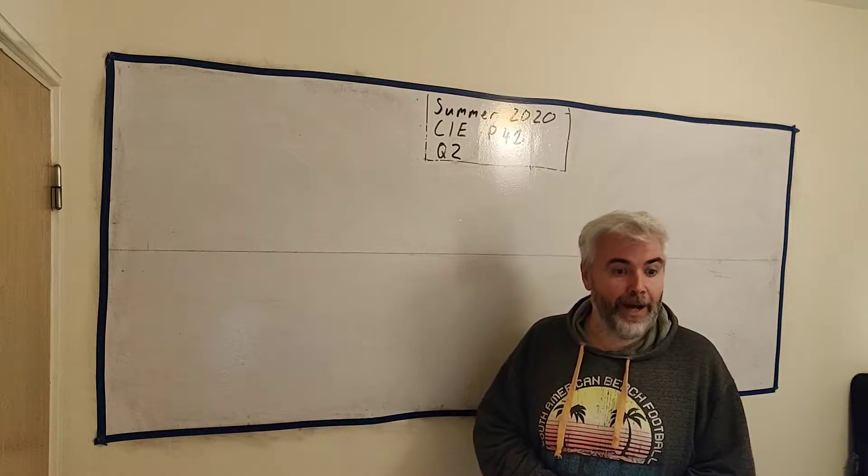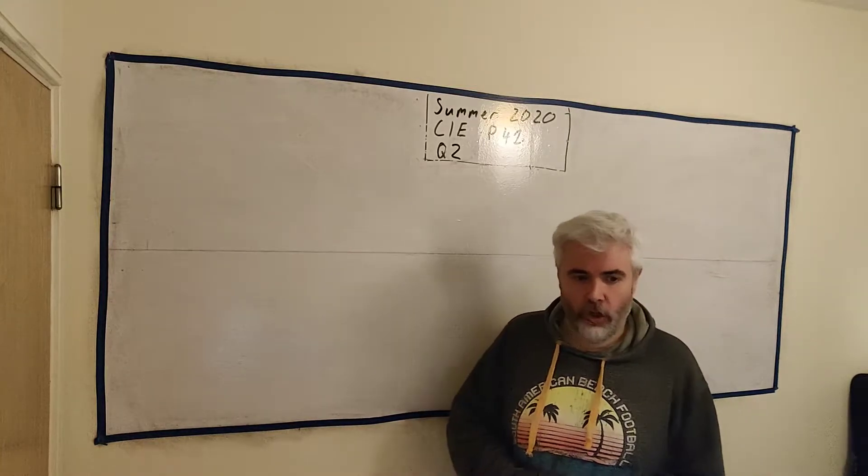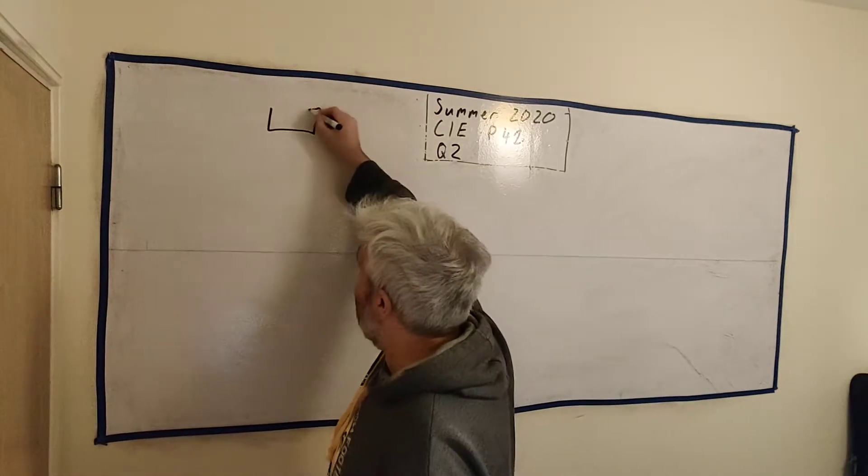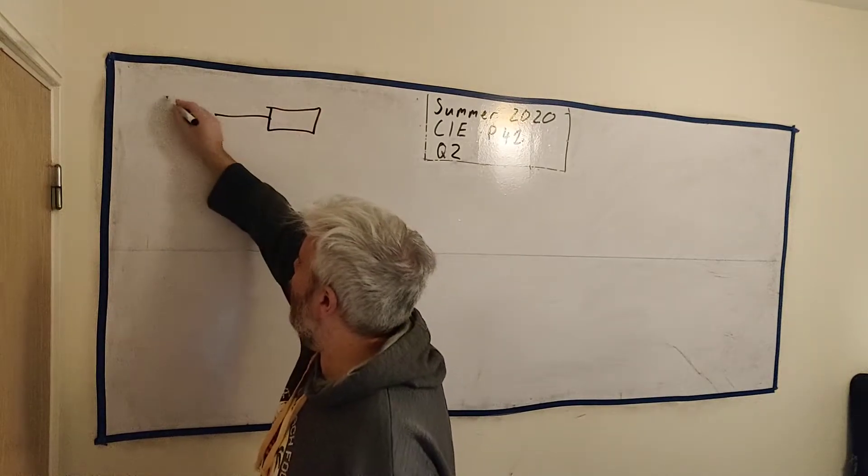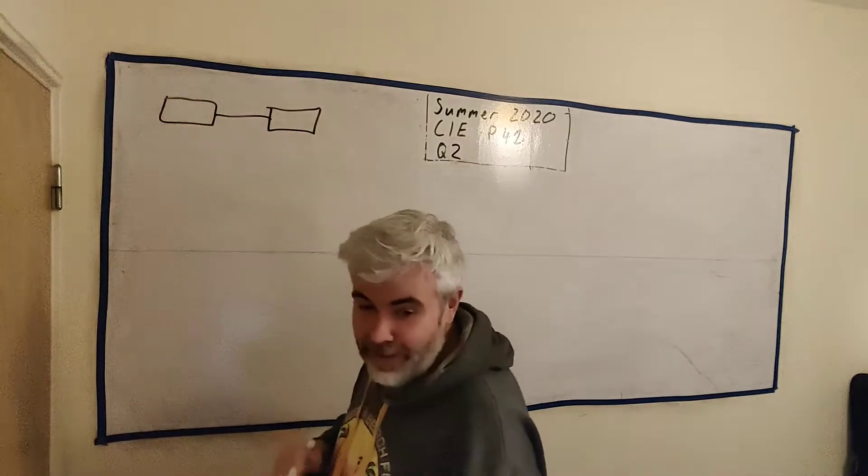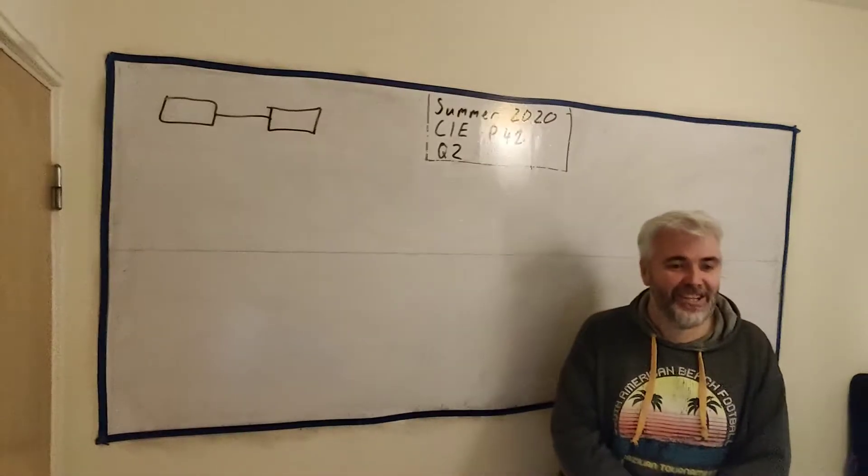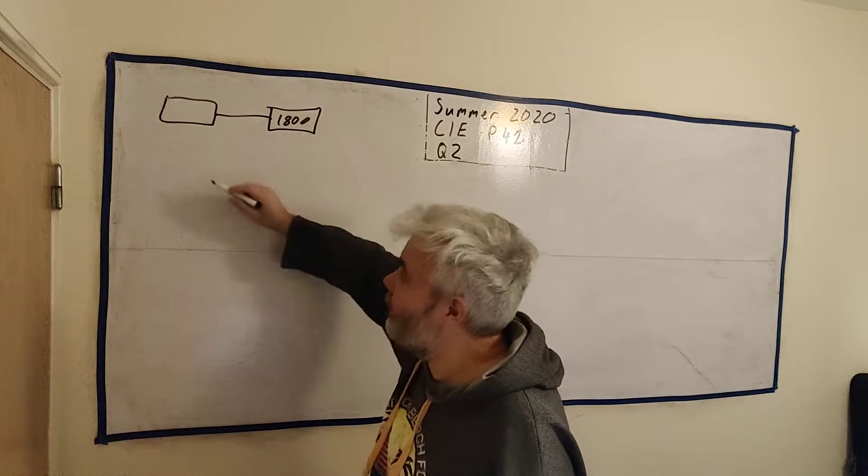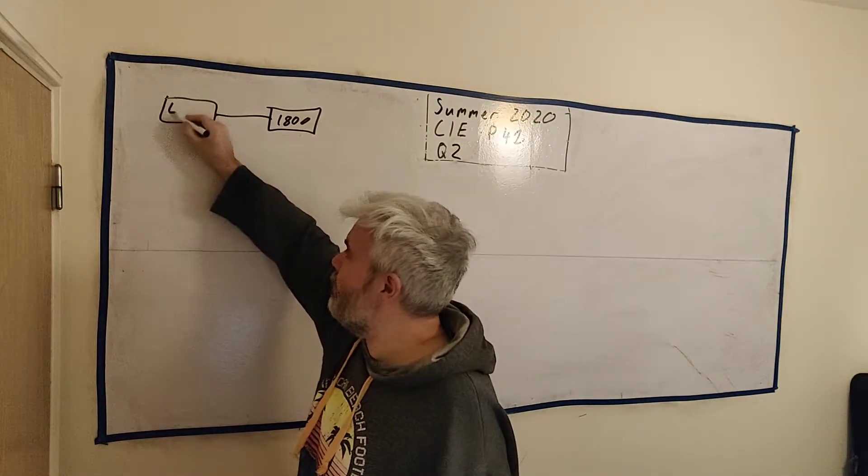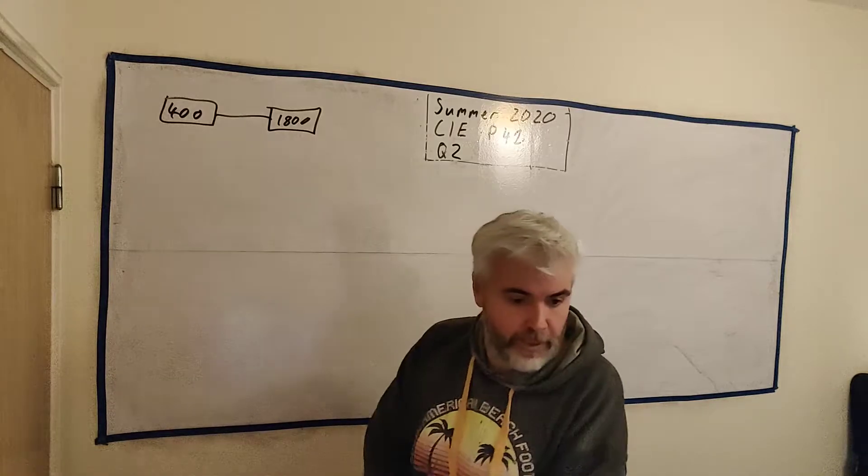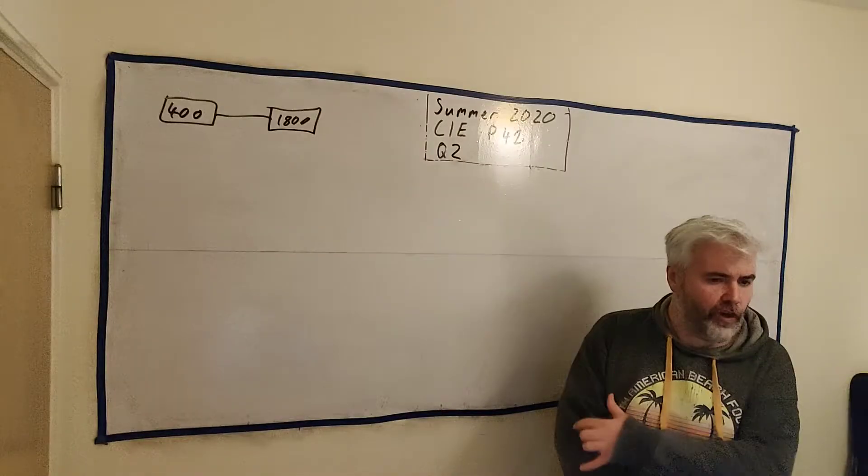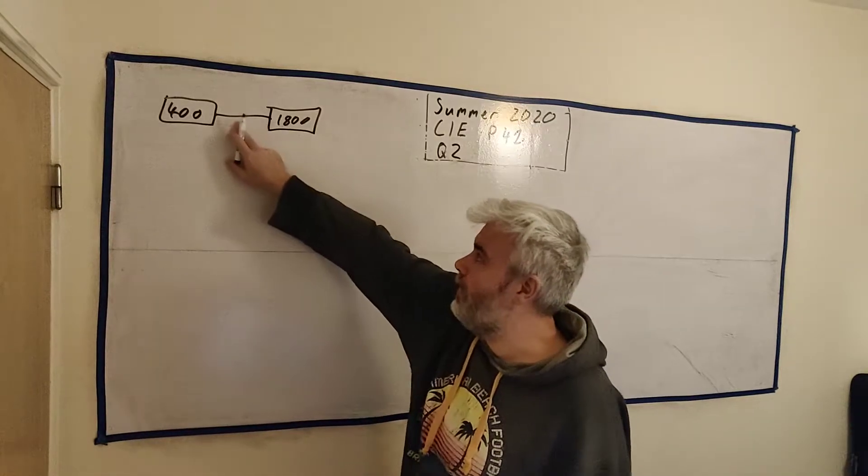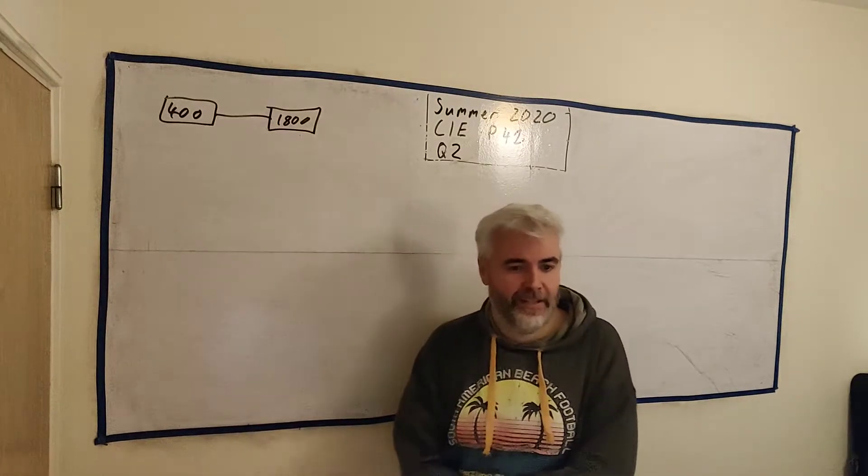In this case we have a car of mass 1,800 kilograms towing a trailer. So I'll draw that like this, a car towing a trailer. Doesn't have to be artistic, you just need to draw it. We have 1,800 kilograms and the trailer is actually 400 kilograms. And it's along a straight road, the trailer is connected by a light rigid tow bar. That means this has no weight when they say it's light.